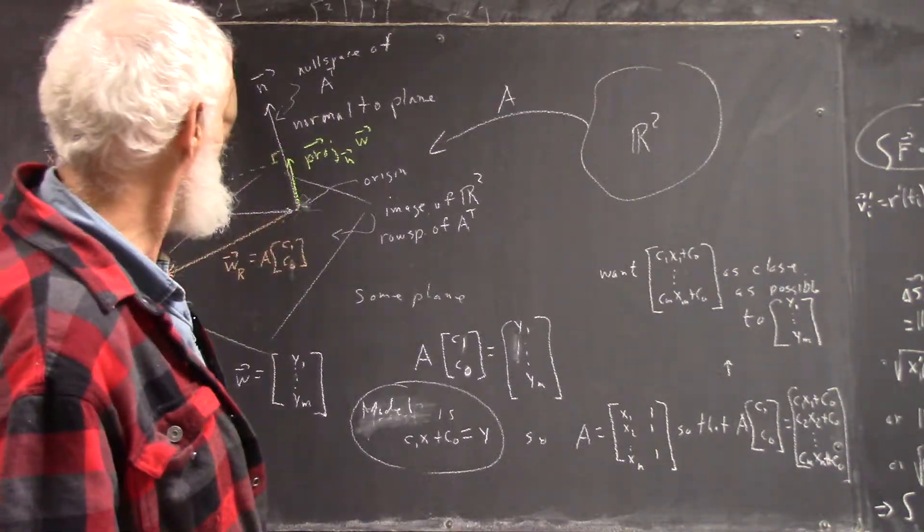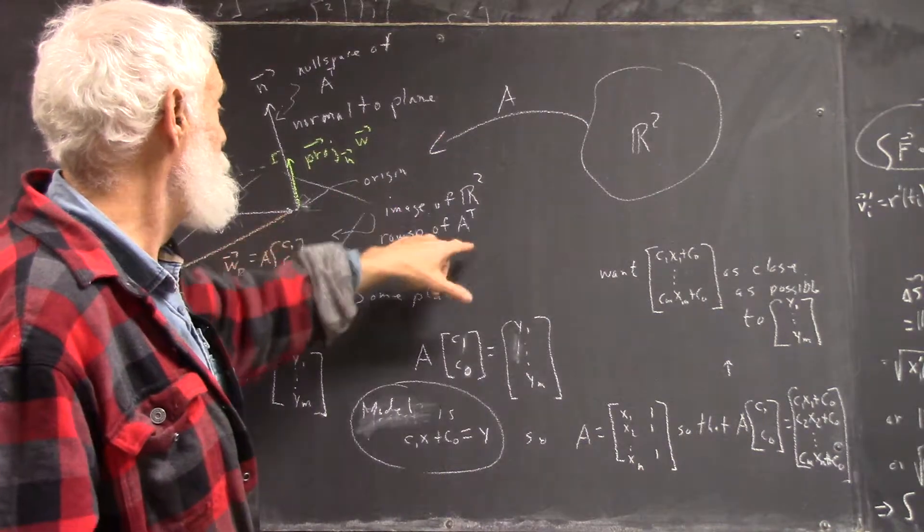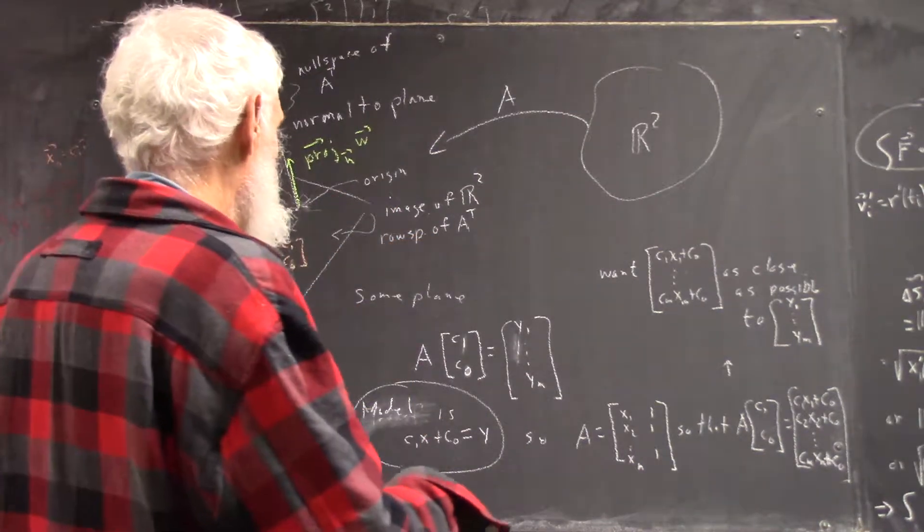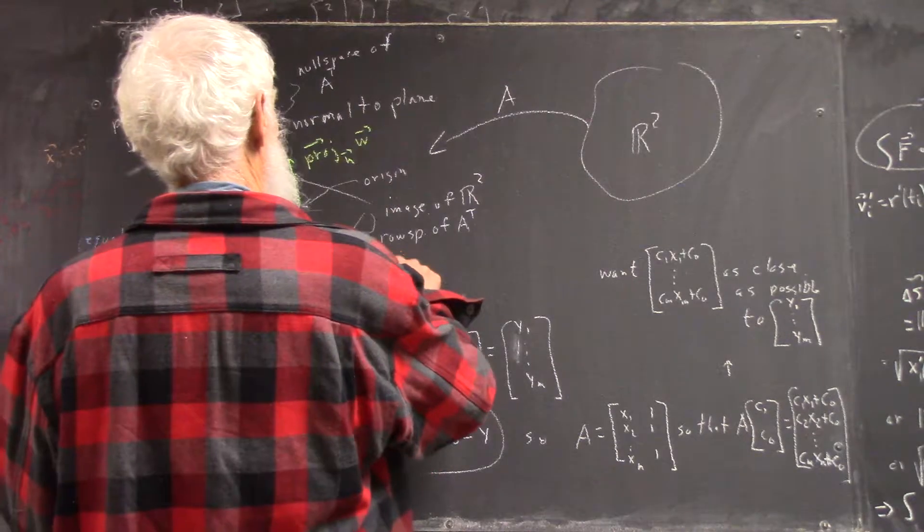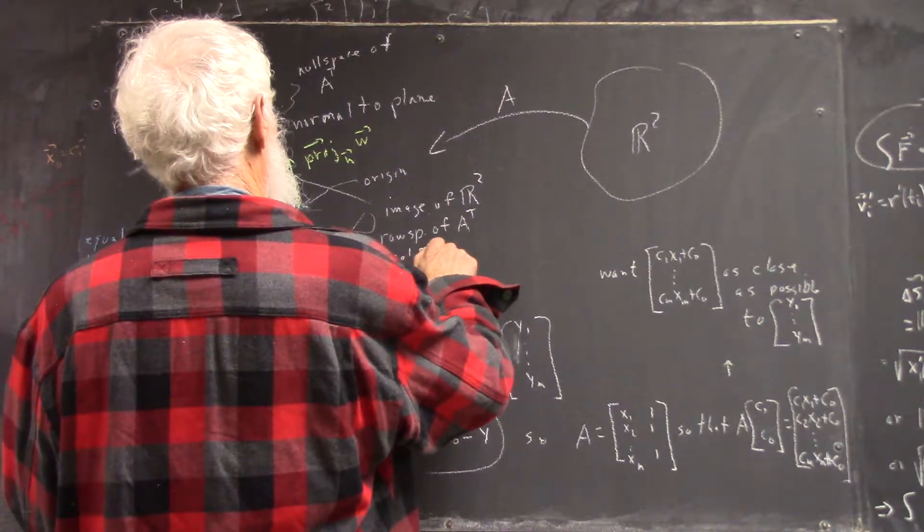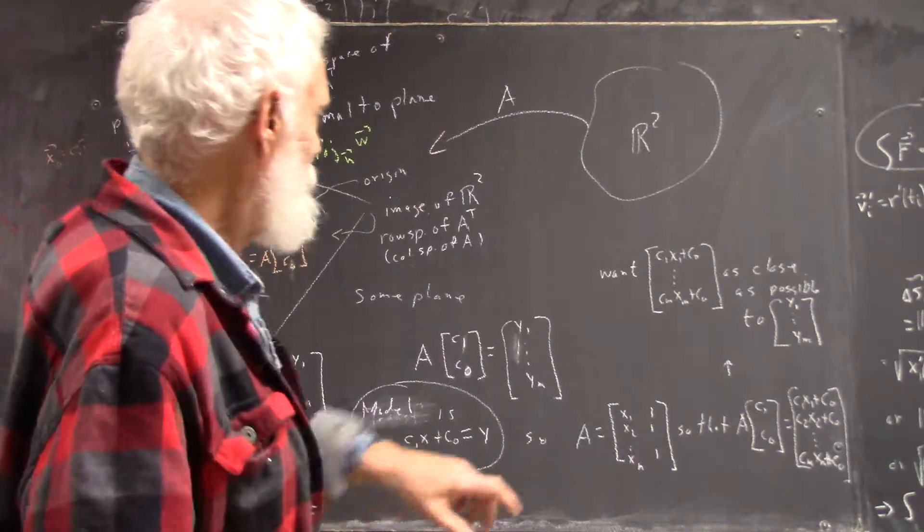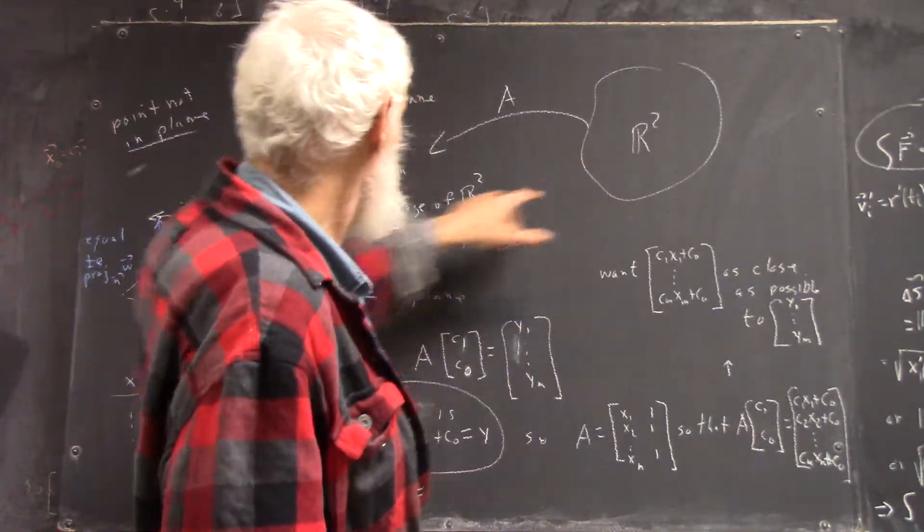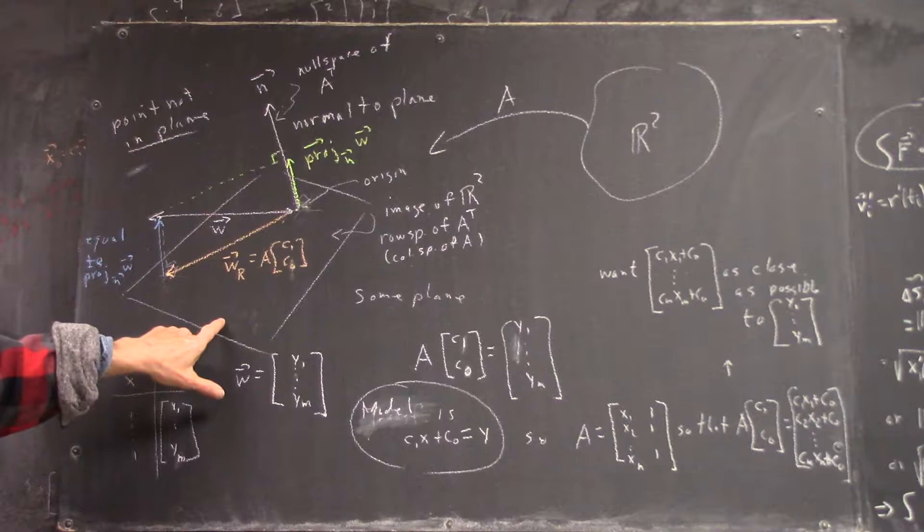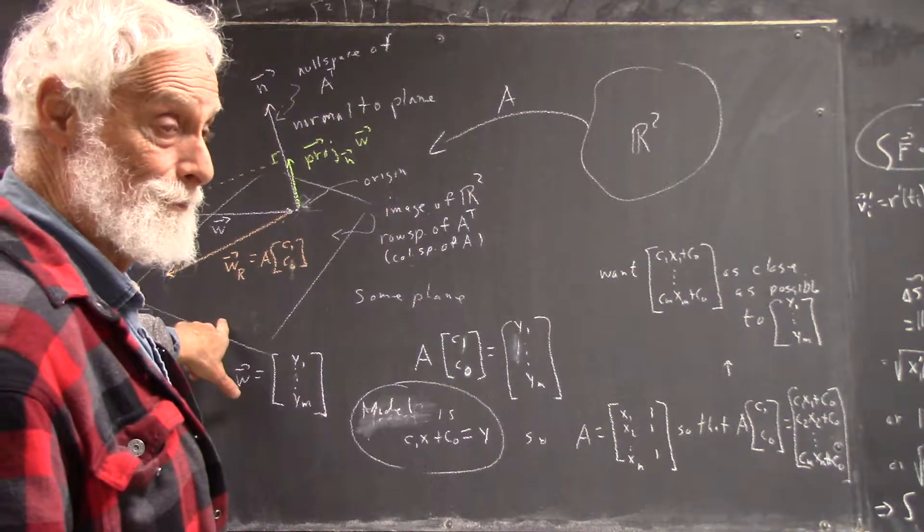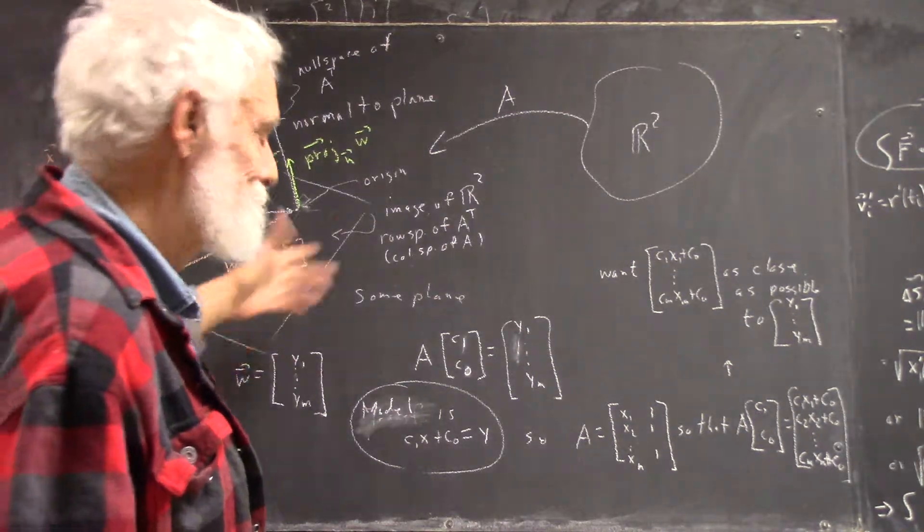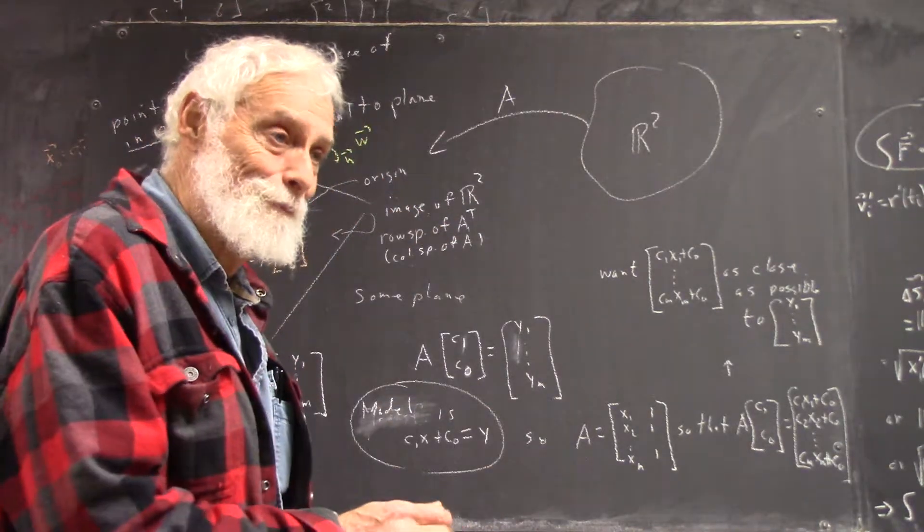Again, null space of A transpose, image of R, it's the row space of A transpose, which is the column space of A. And we should understand that every column of A does appear in the image. And that the columns do span the image. Because, well, we've been over that.